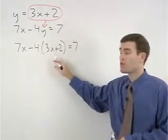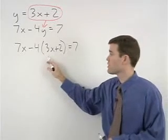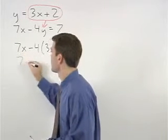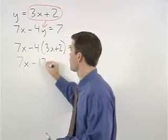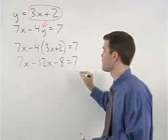Now we can solve for x. If we simplify on the left side, we get 7x minus 12x minus 8 equals 7.